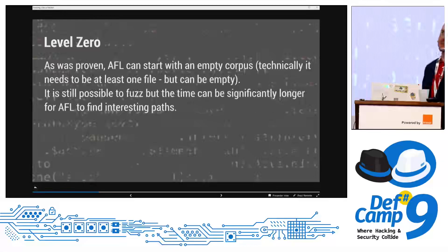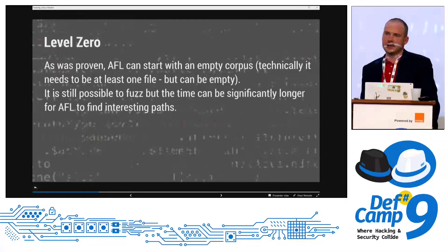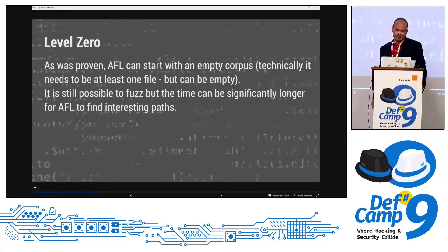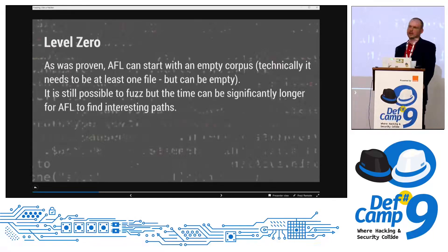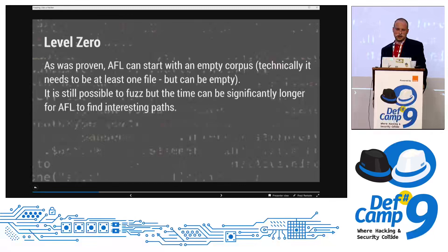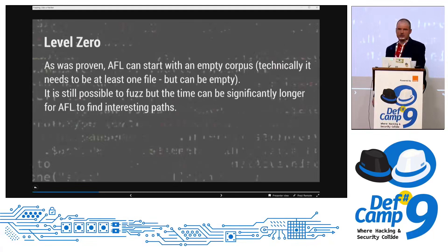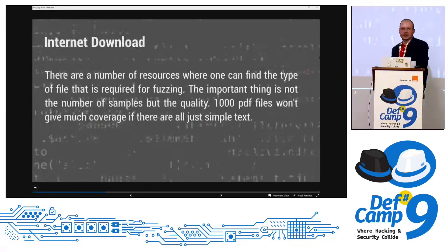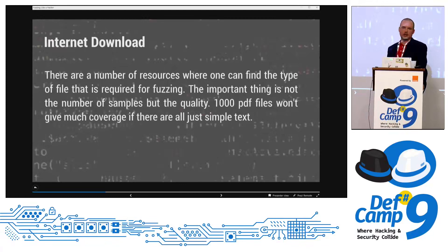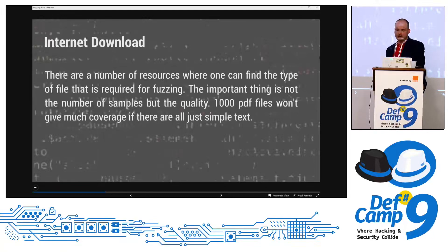What you can do is start from either zero — give nothing. AFL can do that, you can give an empty file. But the time of fuzzing will be much, much longer. It was already proven by Zalewski — you can see on his web page the test when he started from a zero file and after some time AFL generated an appropriate PNG file. So it works. The second thing you can do is download stuff from the internet. If you need PDF files, PNG, JPEGs, whatever you want — the important thing is the quality of the files you are downloading. You can download thousands of PDFs that are simple text and you won't get much coverage.